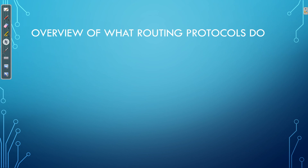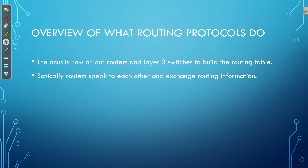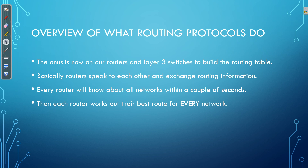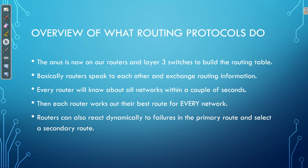To outline the process: the onus is now on the routers and layer 3 switches to build the routing table. Our routers speak to each other and exchange routing information. Every router will know about all networks within a couple of seconds, and then each router will work out the best route for every single network and add those routes to the routing table. Routers can also react dynamically to failures in the primary route and select a secondary route automatically.